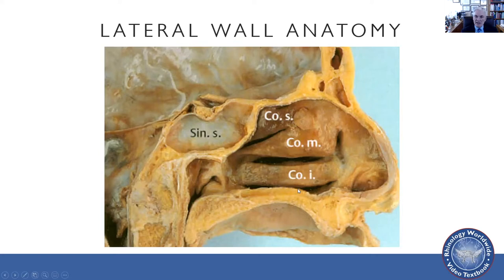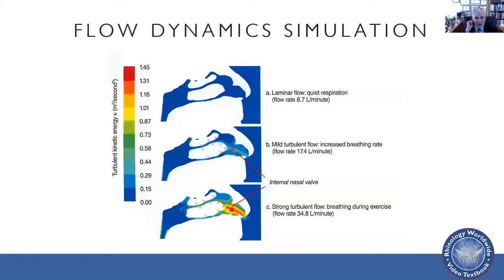People have actually done work on this — flow dynamics, fluid dynamics, computational modeling. They've built actual anatomic models of nasal cavities and pushed air through with different sorts of markers to measure flow. All the studies show similar findings. This is a single sagittal cut. Remember that the airflow is going to be different depending on how far lateral or medial you are in the nose — this isn't necessarily right next to the septum. On this single sagittal cut, blue represents very little turbulence and red represents high turbulence and high flow.